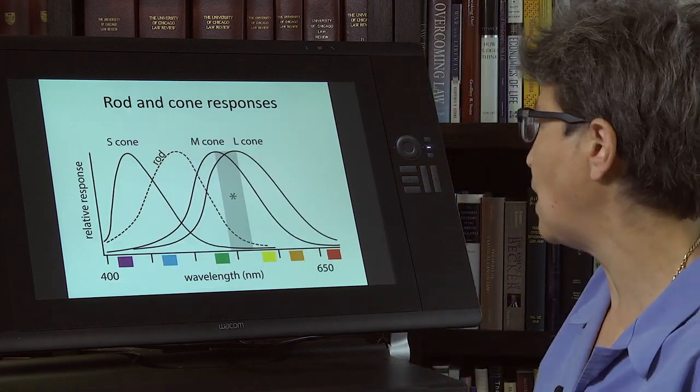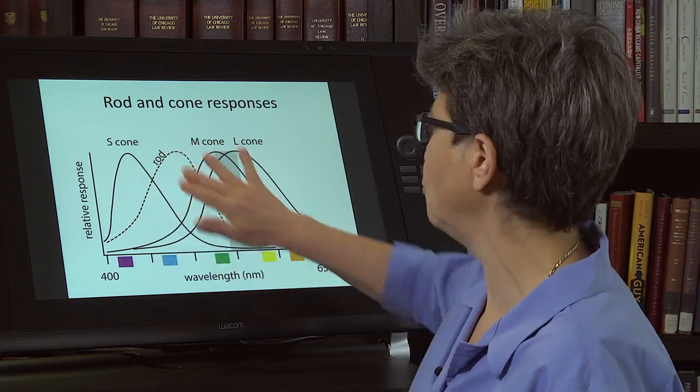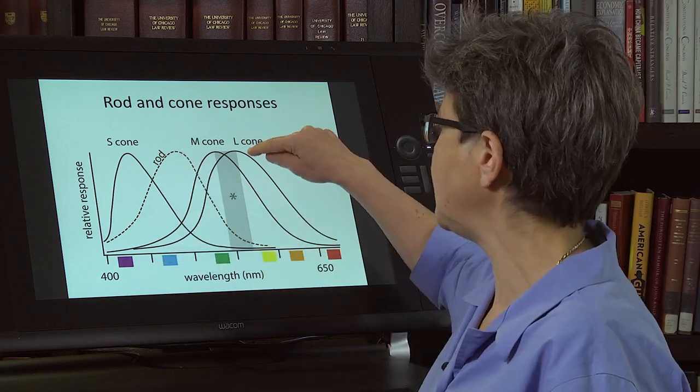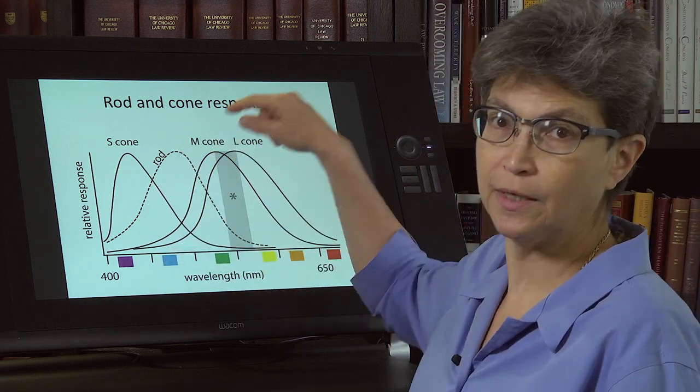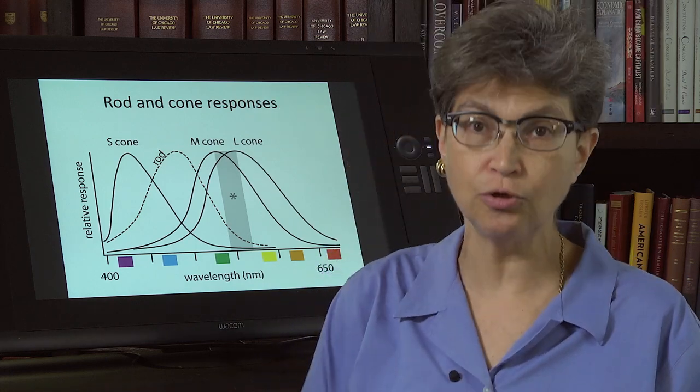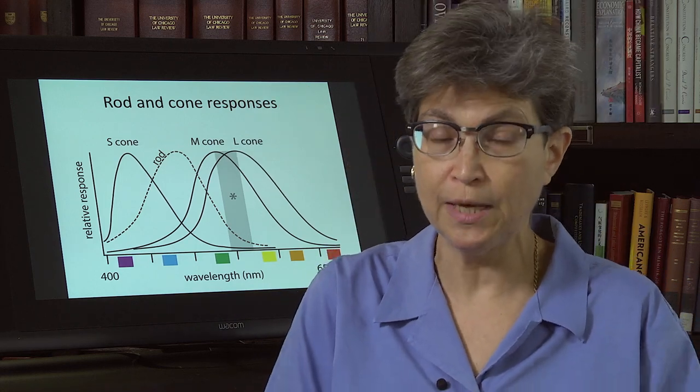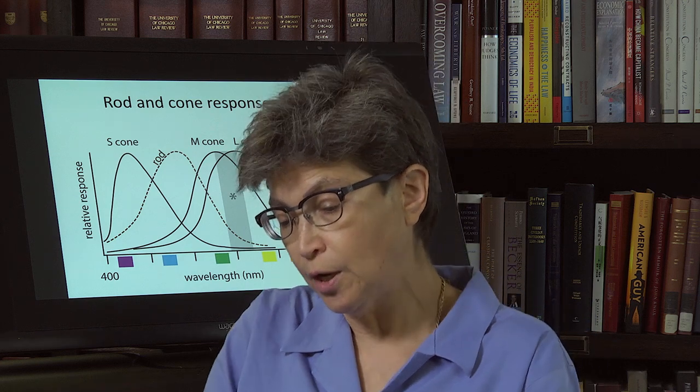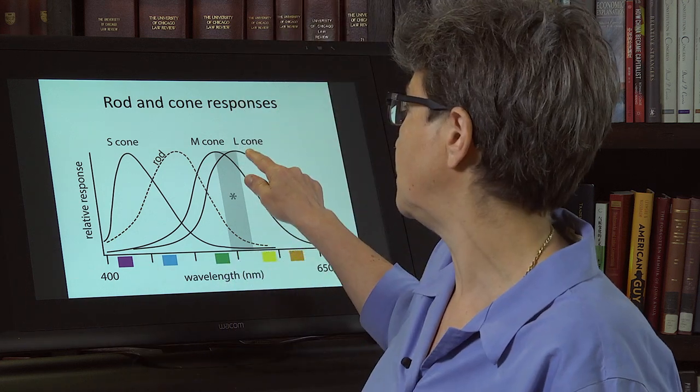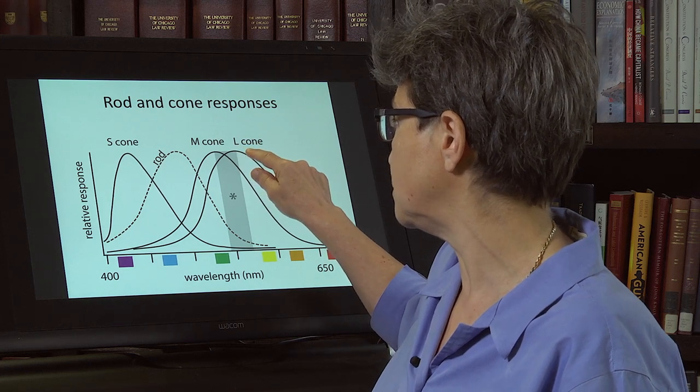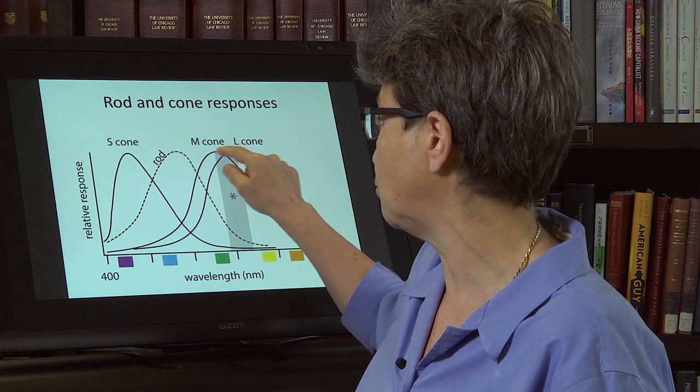Now let's remember how we got here. We're ignoring the rods for the moment, but the L cone got duplicated. And it, as it turns out, the L cone is on the X chromosome. It got duplicated. It's right next door. It shares about 98% homology between the sequence of the L cone and the M cone.